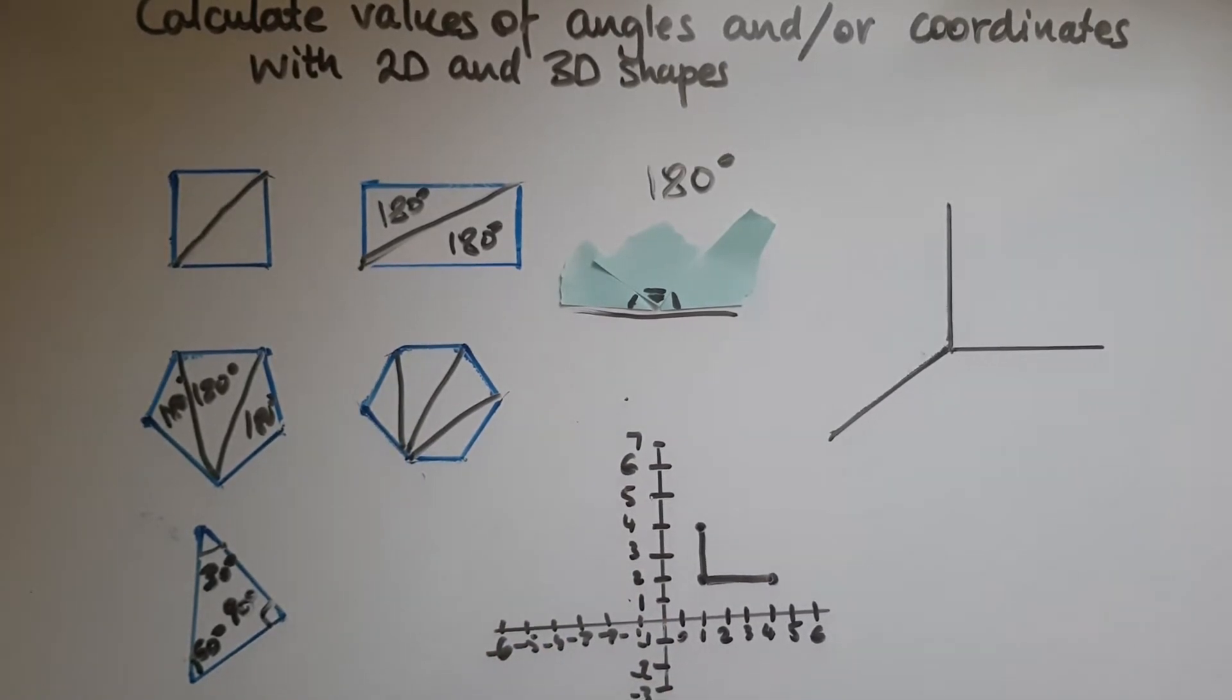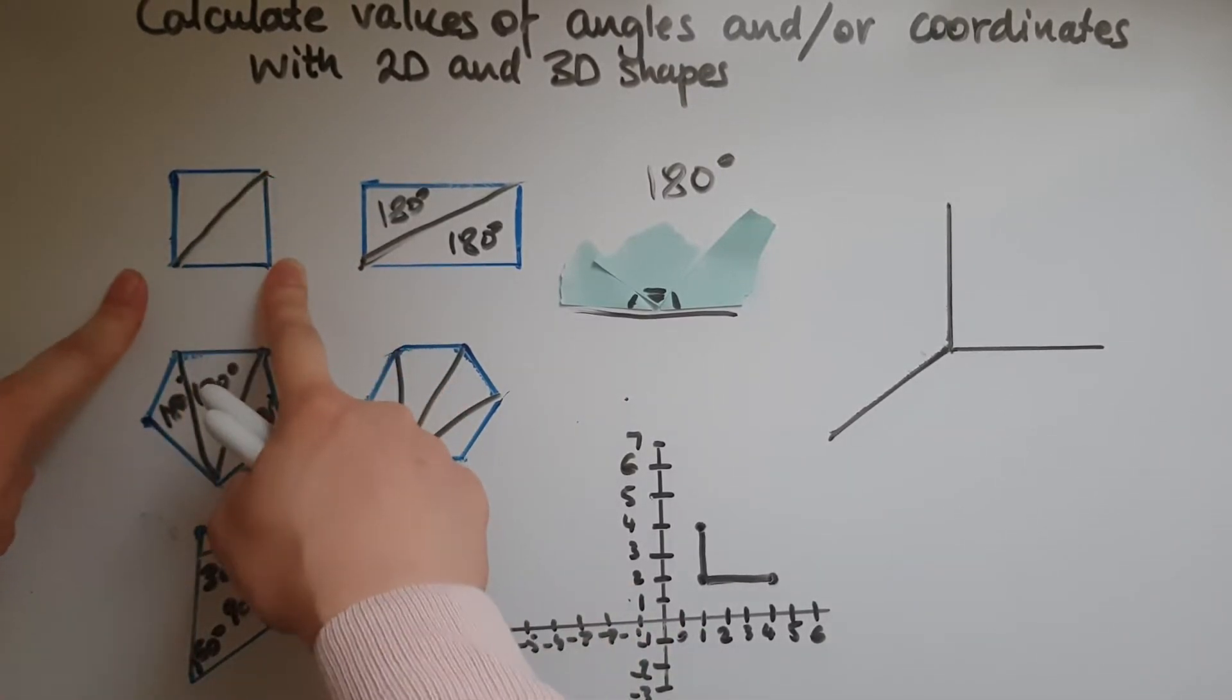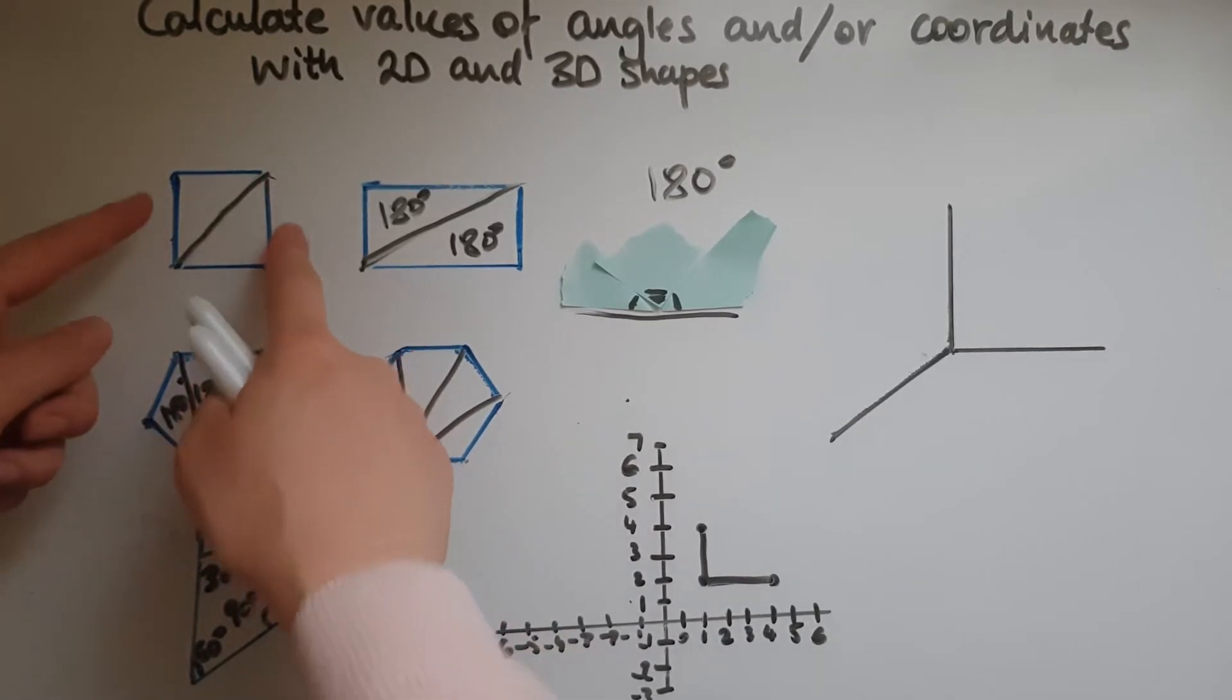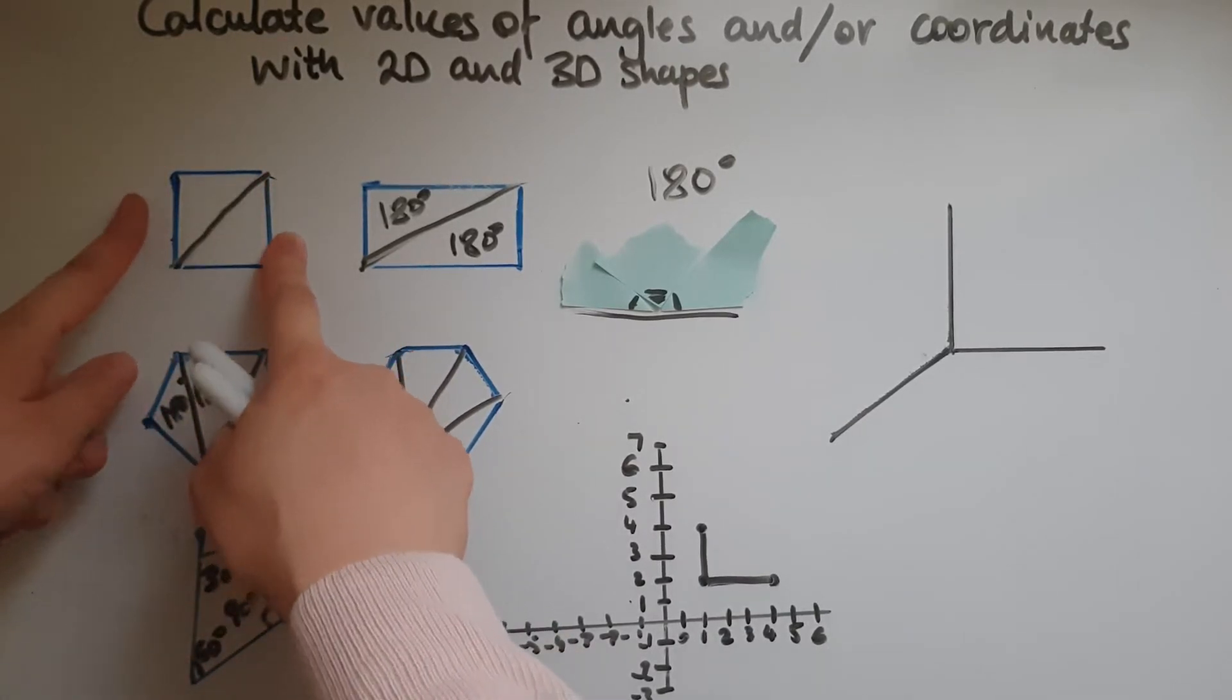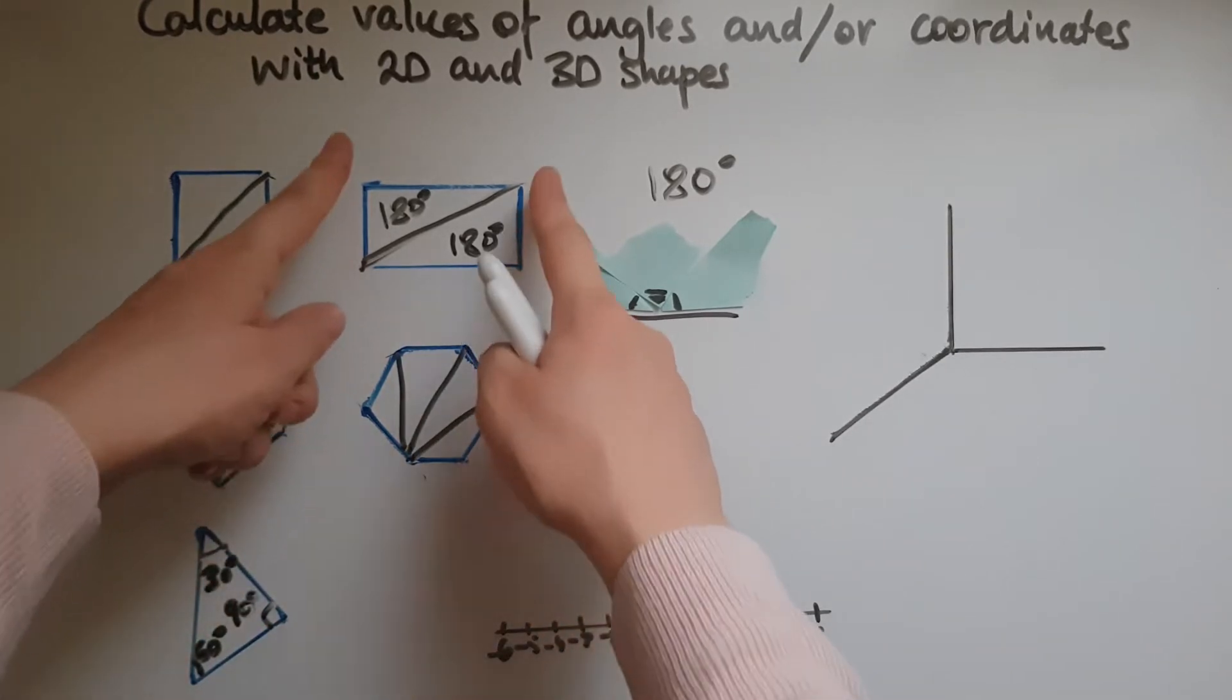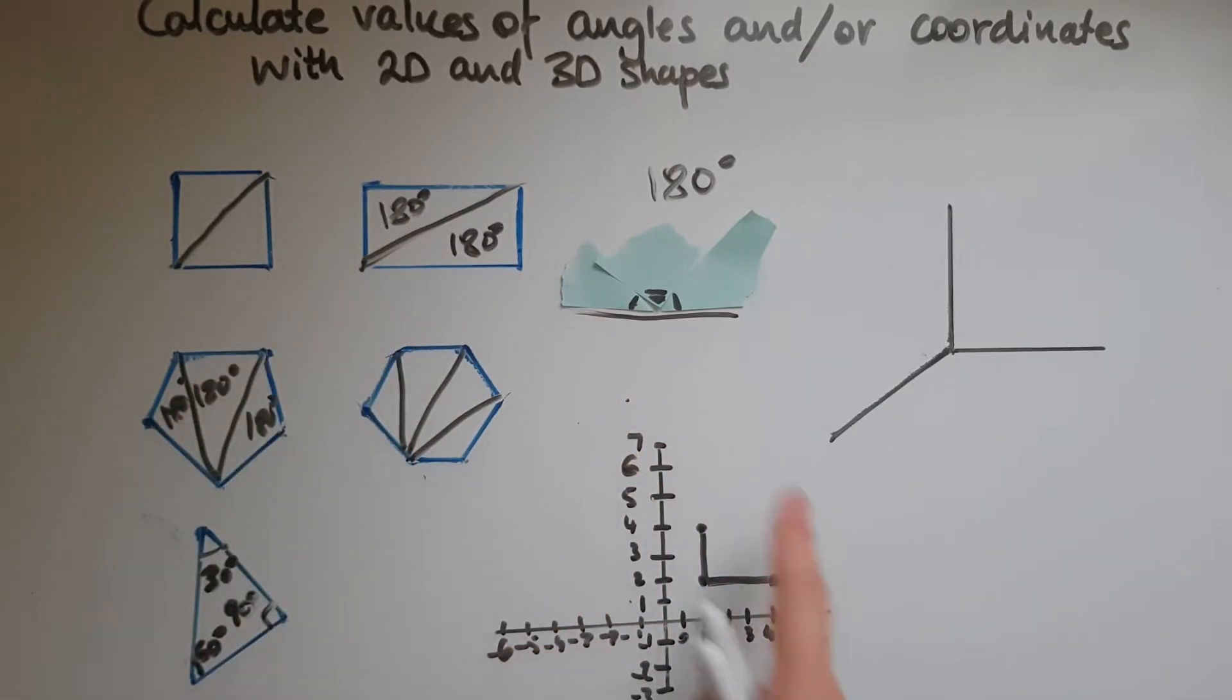But it's also worth remembering that a square has equal sides which are parallel to each other. So same thing when it comes to the parallel sides of a rectangle. So if we're given a plane and we're given two dimensions of a rectangle, we should be able to work out the coordinates or the other two dimensions of the rectangle.